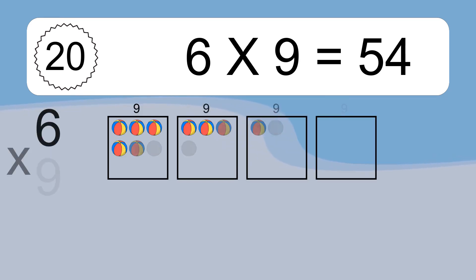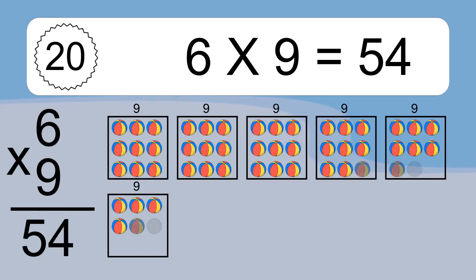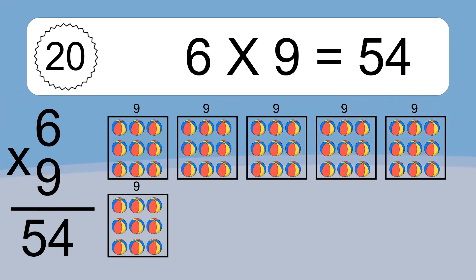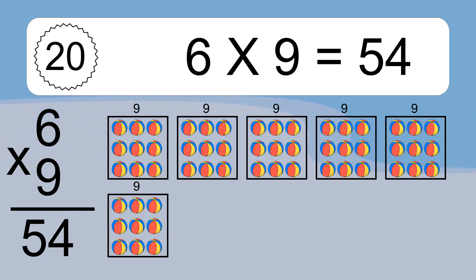6 times 9 equals 54. We have 6 boxes, and each box has 9 colorful balls inside. If you count all the balls in all the boxes together, you will have 6 times 9 balls. This equals 54 balls.